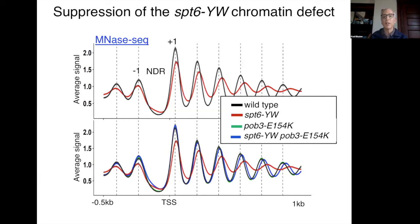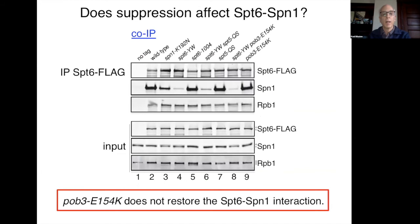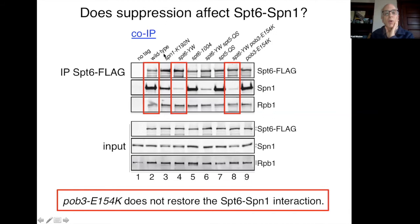We know that the defect in SPT6-YW is a defect in the SPT6–Spt1 interaction, so we looked at that by co-IP. Focusing on three key lanes: in wild type, SPT6 is IP'd and Spt1 co-IPs at a high level. In SPT6-YW, the co-IP of Spt1 is very low. In the SPT6-YW / Pob3 double mutant, the co-IP of Spt1 remains very low. So the Pob3 suppressor, even though it strongly suppresses all those phenotypes, does not restore the SPT6–Spt1 interaction.